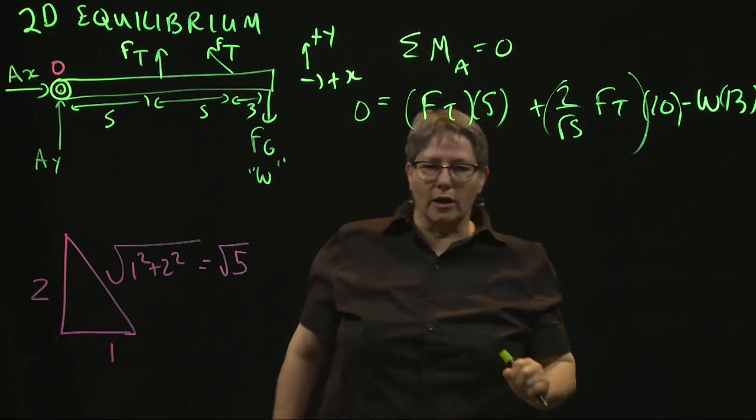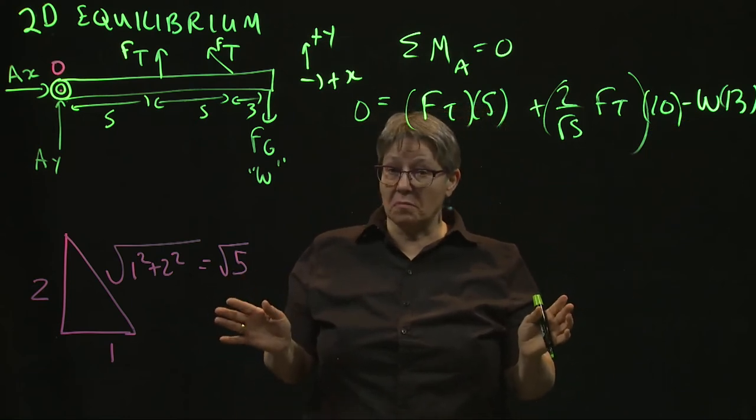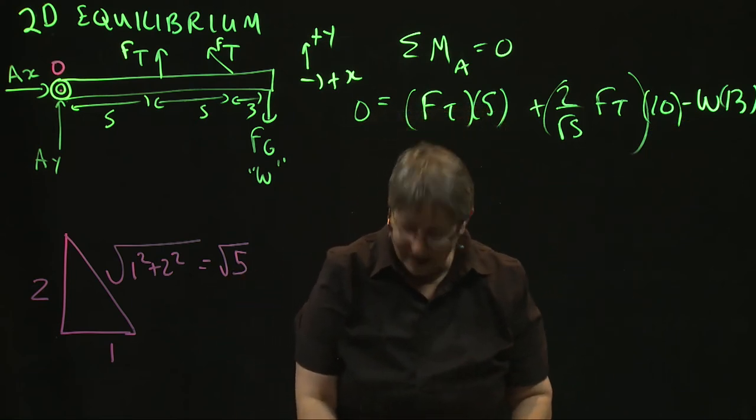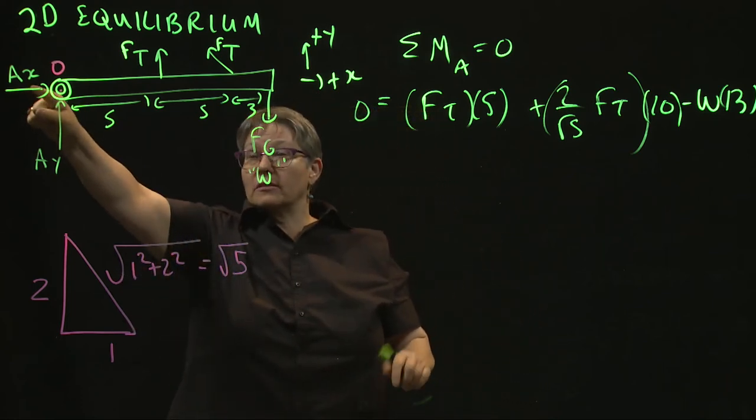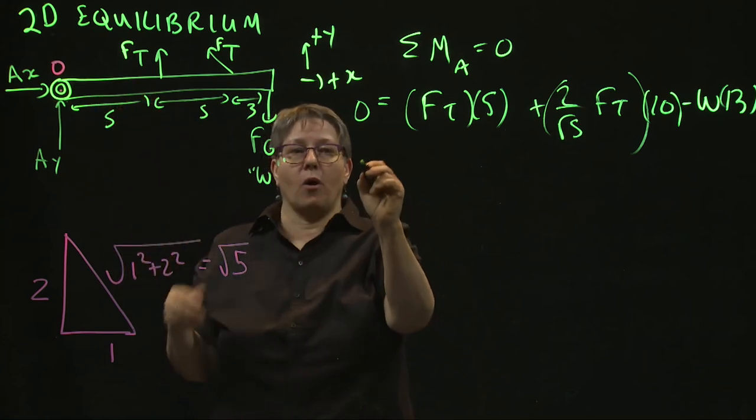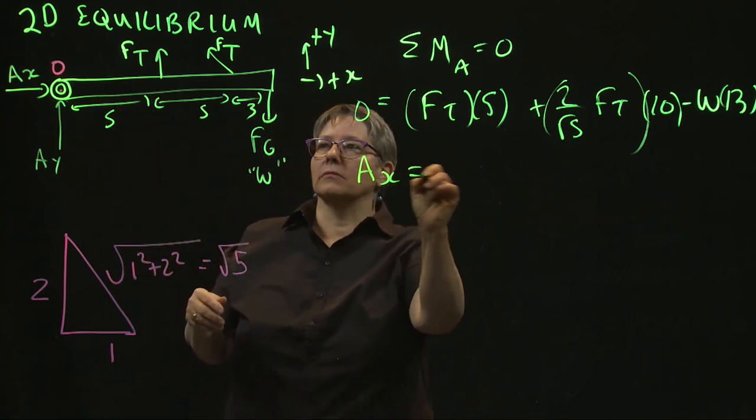So two unknowns. But two unknowns, not bad. We can probably deal with that one. Now, we're making this direction positive x.